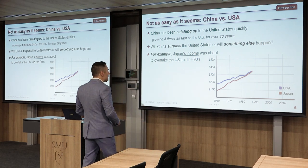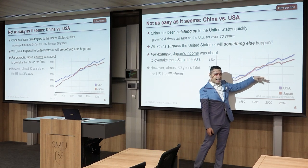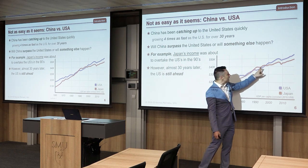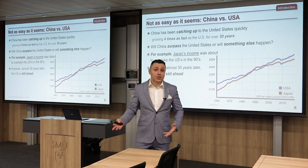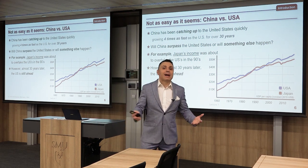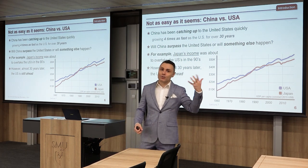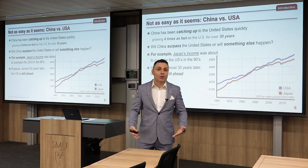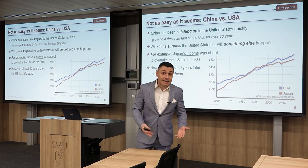But what happened in the end? Japan surpassed the US only briefly, and depending on the measurement, they were very close for some time. But almost 30 years later, the US is still ahead of Japan. It's not as easy as just taking a mathematical value that is small but grows faster and another that is bigger but grows slower — you're dealing with two live organisms where things happen.